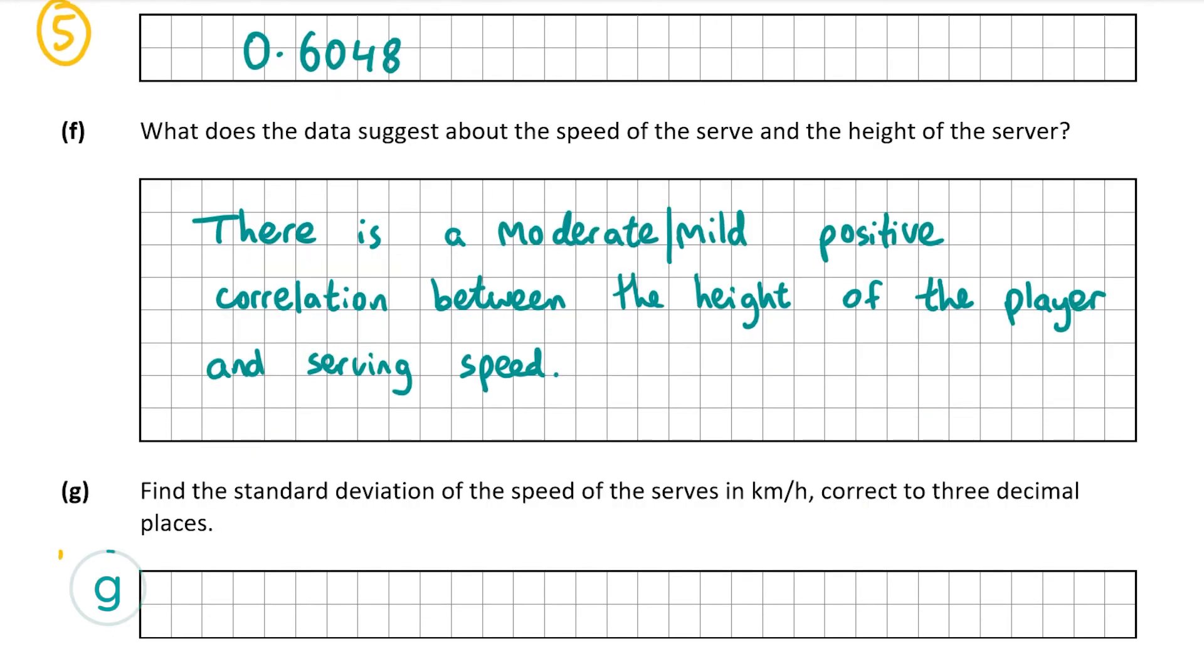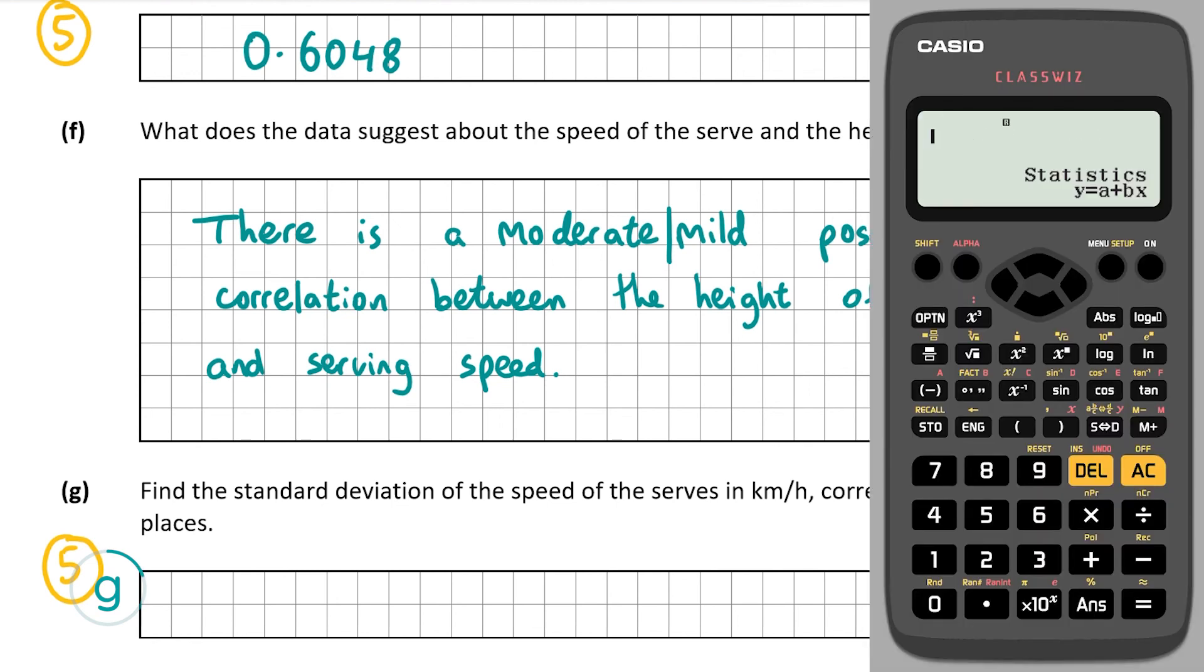Now let's have a look at part G which is also worth five marks and this wants us to find the standard deviation of the speed of the serves in kilometers per hour. So once again we go to our calculator. This time we're going to clear and we're going to put the data in again. You can click menu 2 but this time it's only going to be one variable and that's going to be the speed of the serve. So it's going to be 1, and I know it says x but we're going to put in our y values. We're going to put in our 20 y values again and once again check to make sure that you have your 20 values in for the speed.